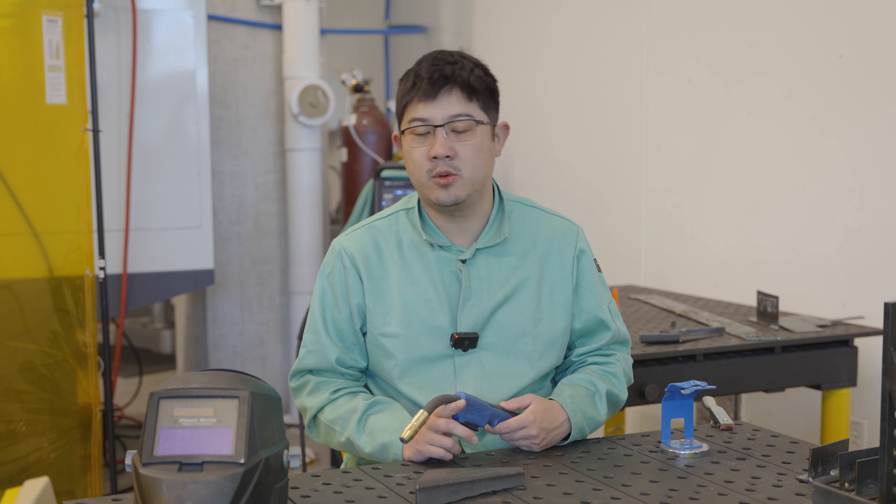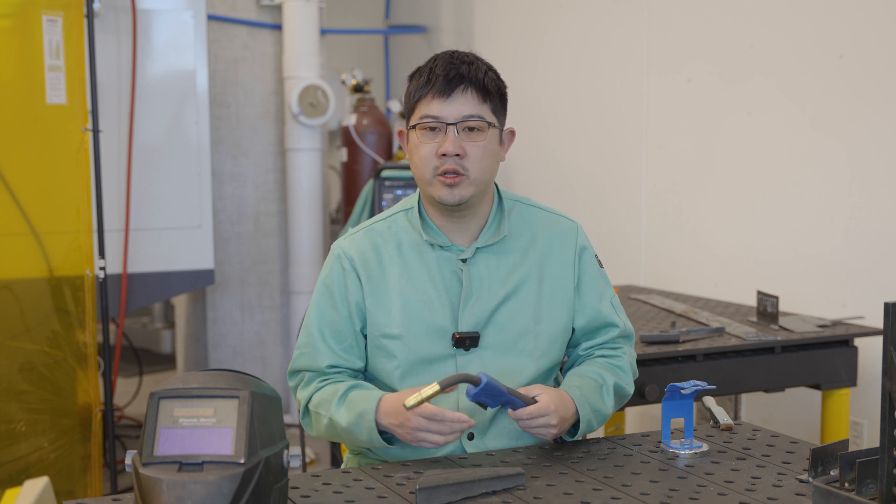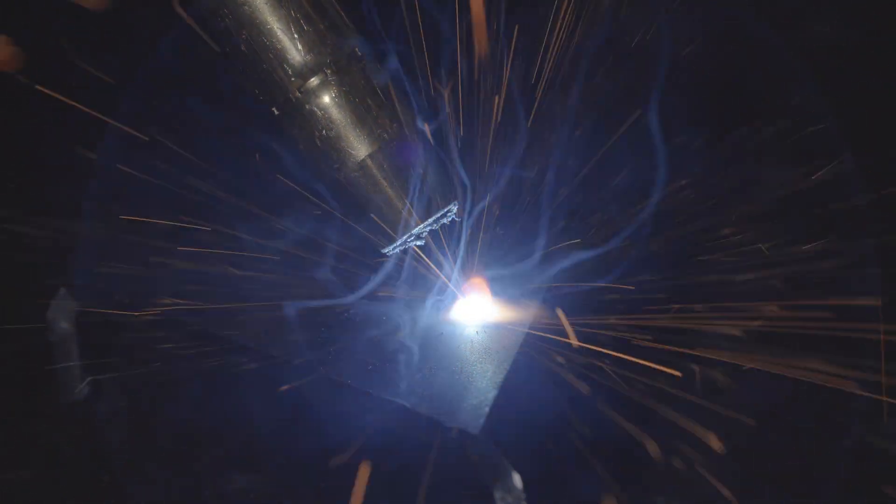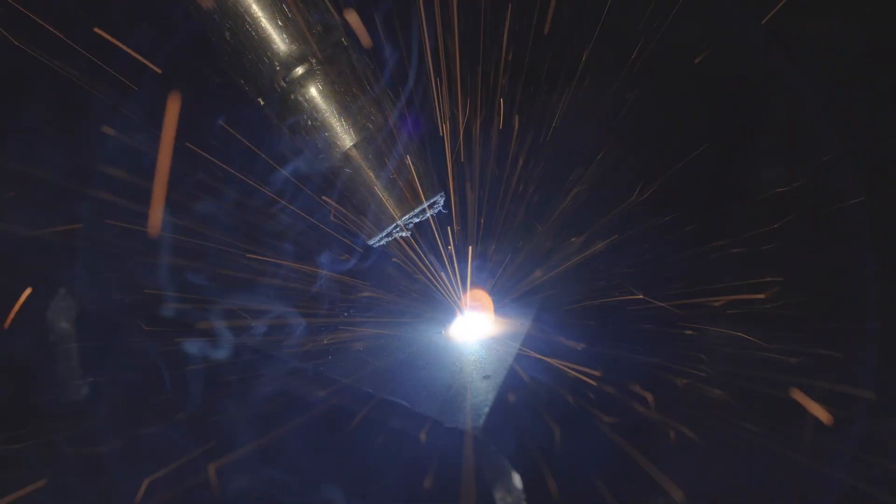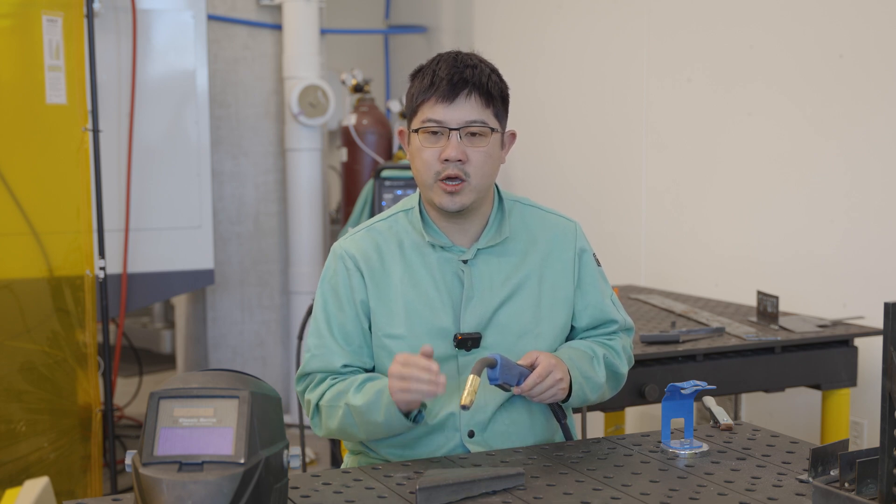We also want to talk about some of the common mistakes we see newer welders make, as well as experienced welders sometimes. Number one being that as they're welding, the torch gets higher and higher from the workpiece. This can cause your weld to get sporadic, as well as you'll lose your shielding gas, causing your weld to corrode rapidly. You want to make sure that you're maintaining a comfortable position, so you maintain that roughly half-inch torch distance from your welding gun to your workpiece.